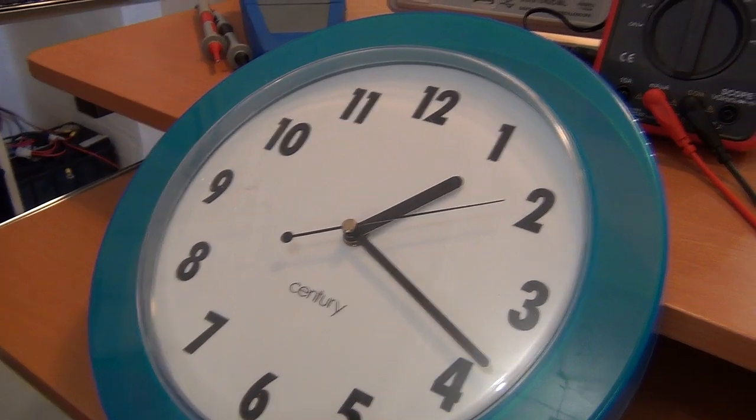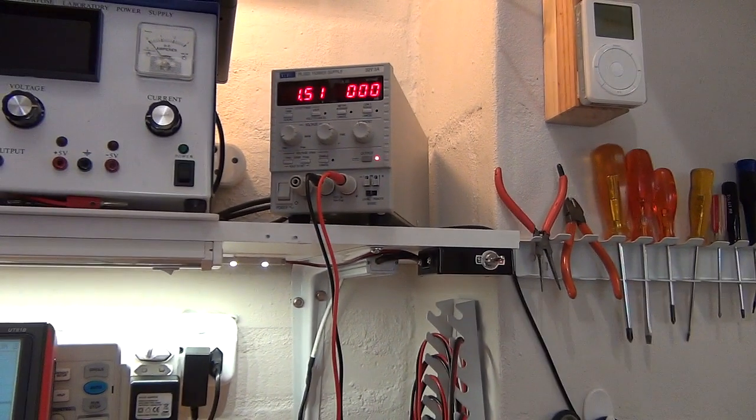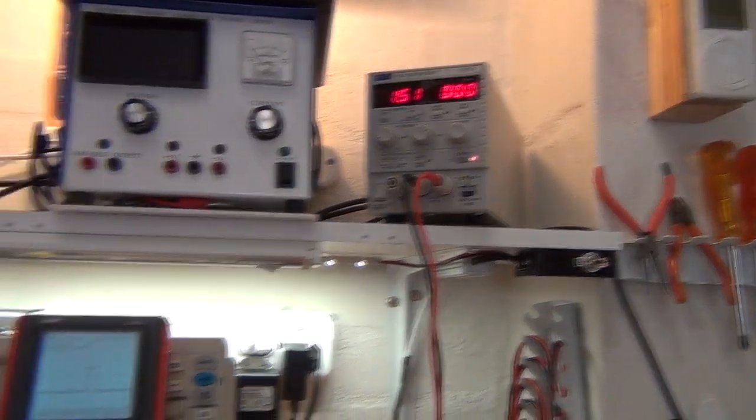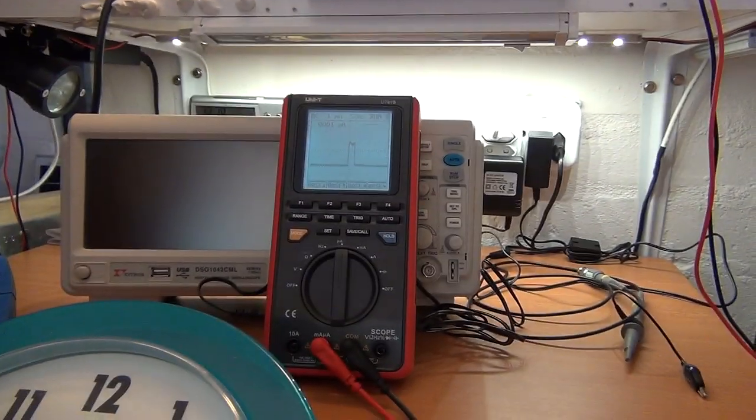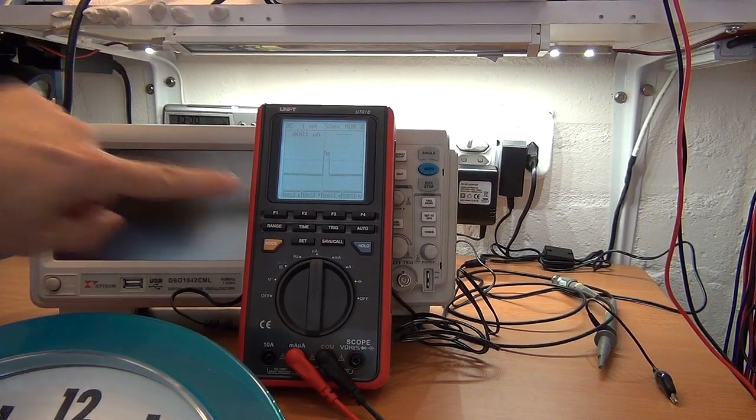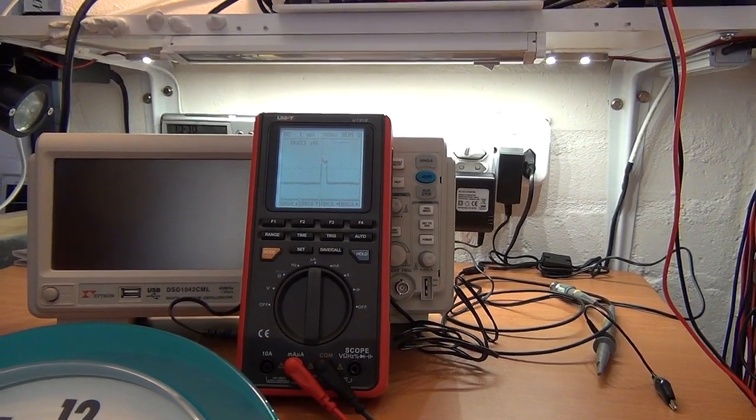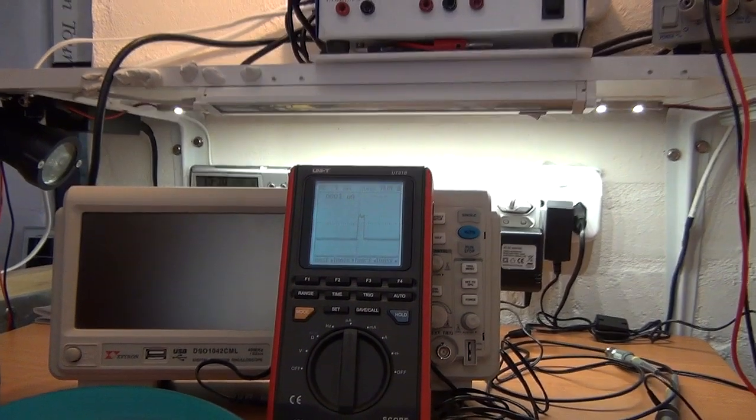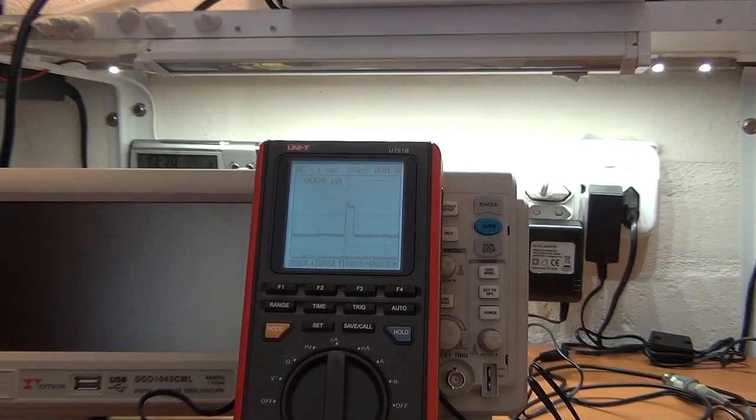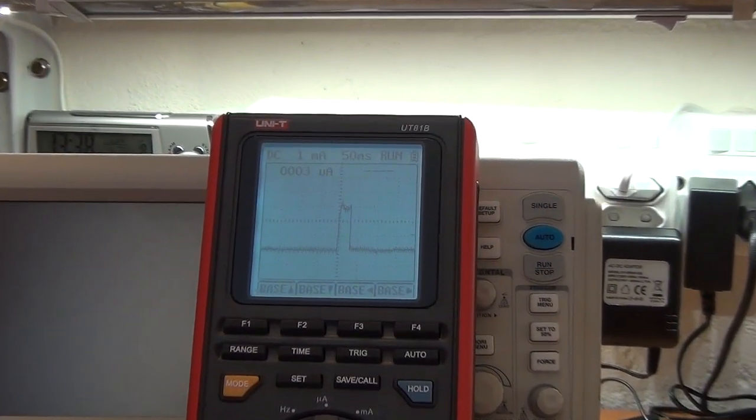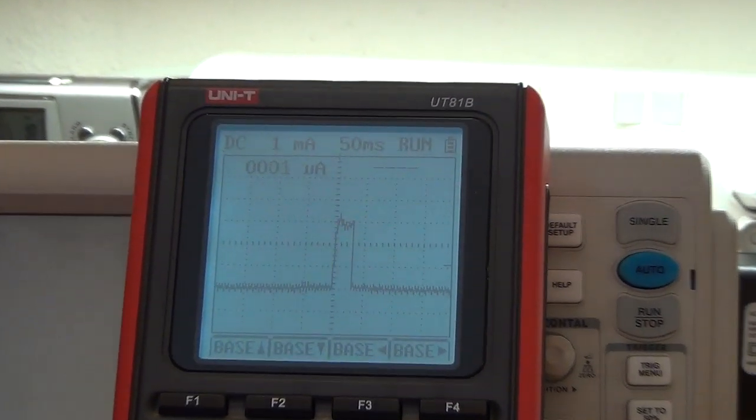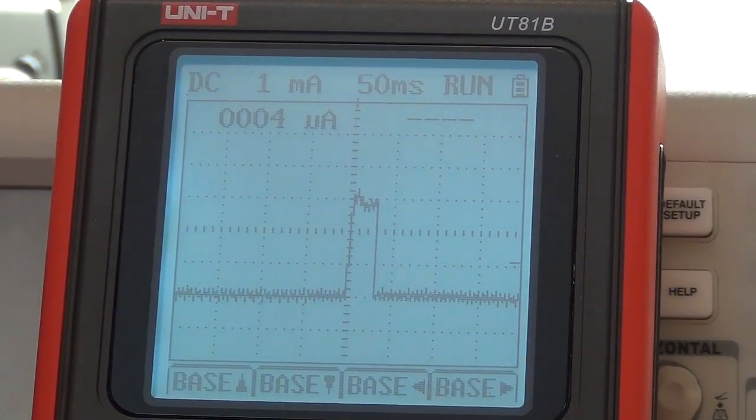I've got the clock ticking away over there. I have my variable power supply supplying the voltage to the clock which is obviously going through the Unity scope meter and I've got it set to microamps. I'll just draw you in to have a look. And there you go.